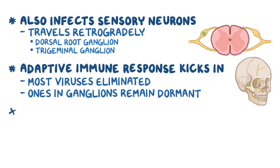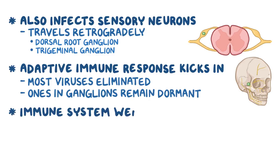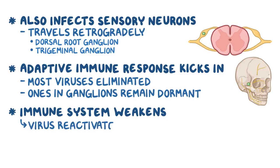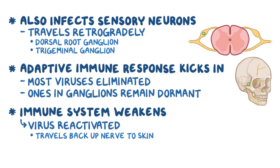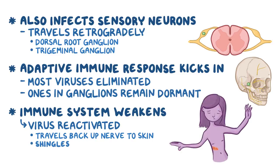Later on, if the immune system weakens due to aging, stress, or immunosuppressive therapy, the virus can be reactivated. It can then travel back up through the sensory nerve — anterogradely — to the skin and cause an infection in the innervated dermatome. That's called herpes zoster, or shingles.